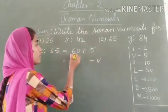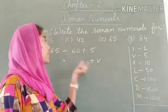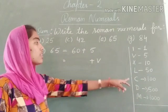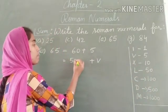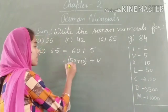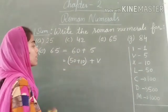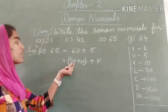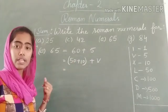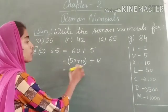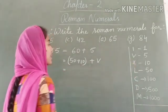we do not have any symbol for 60. But the nearest value to 60 is 50. So 60 can be written as 50 + 10. This means the rule of addition. In the rule of addition, the smallest value should be written on the right side of the greatest value. Here, the symbol for 50 is L and for 10 we use X.